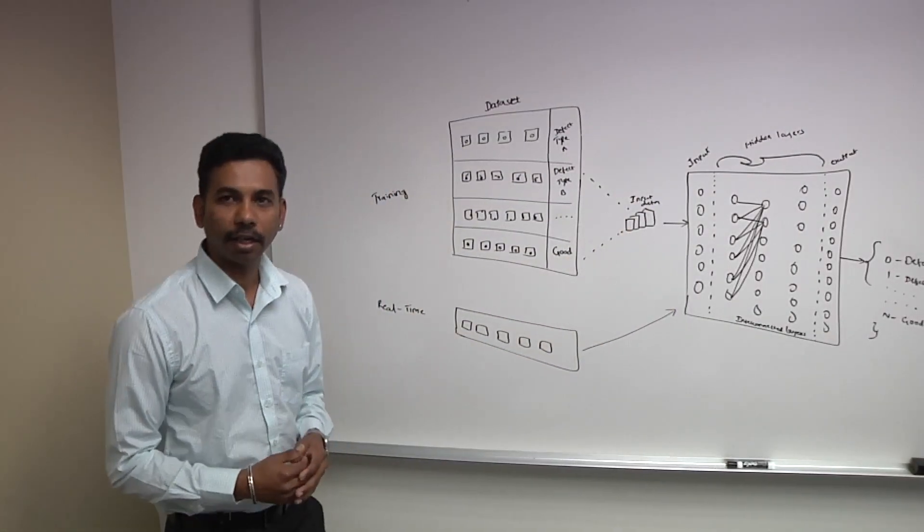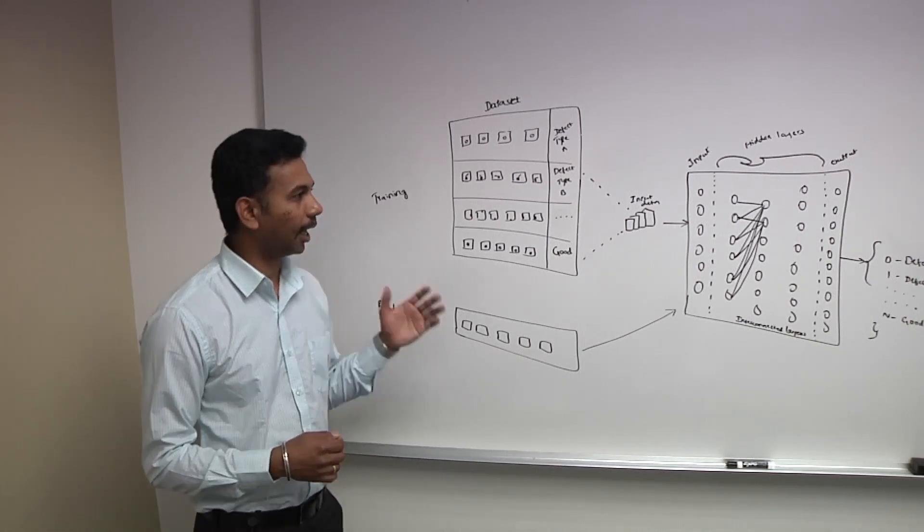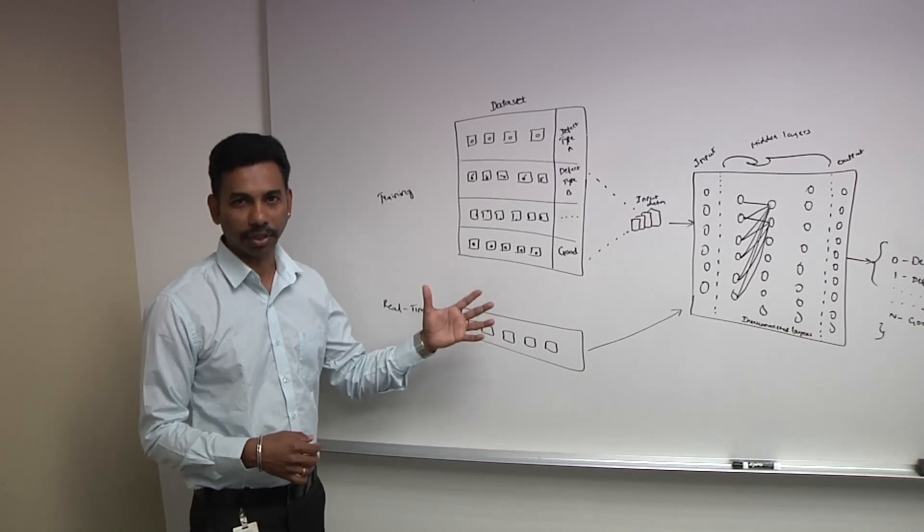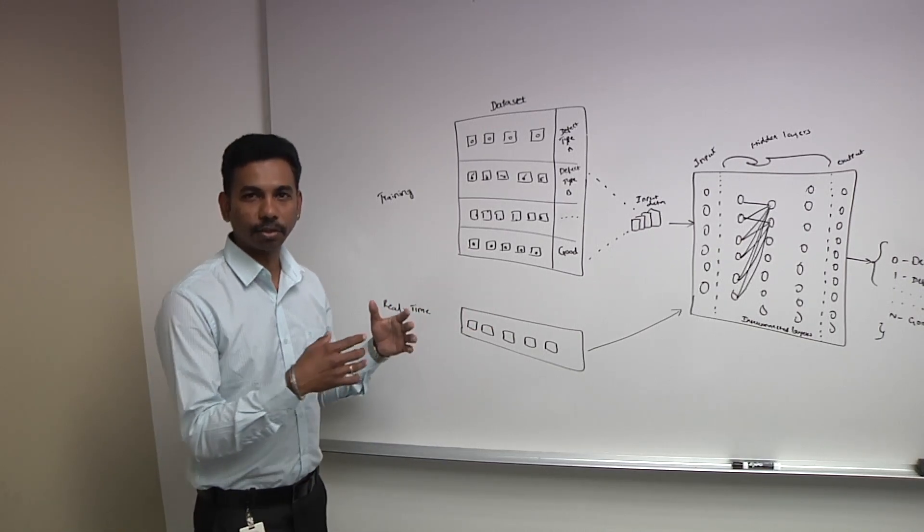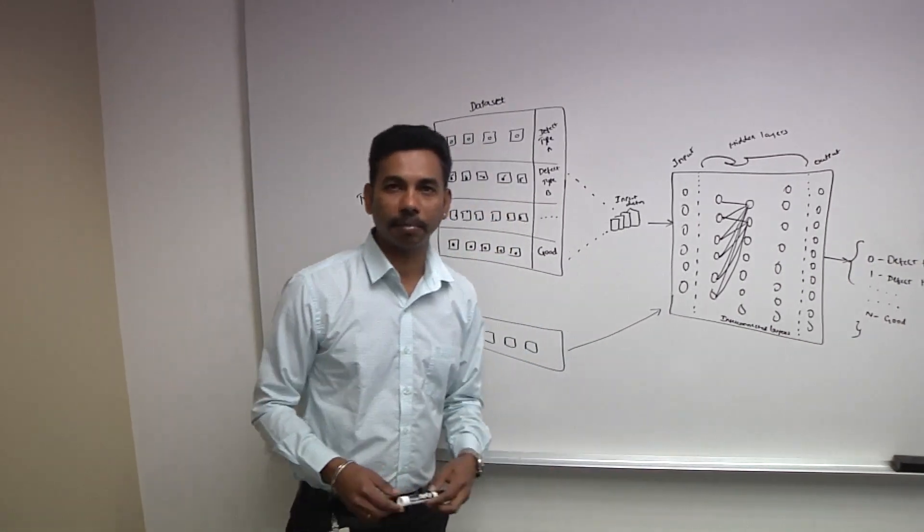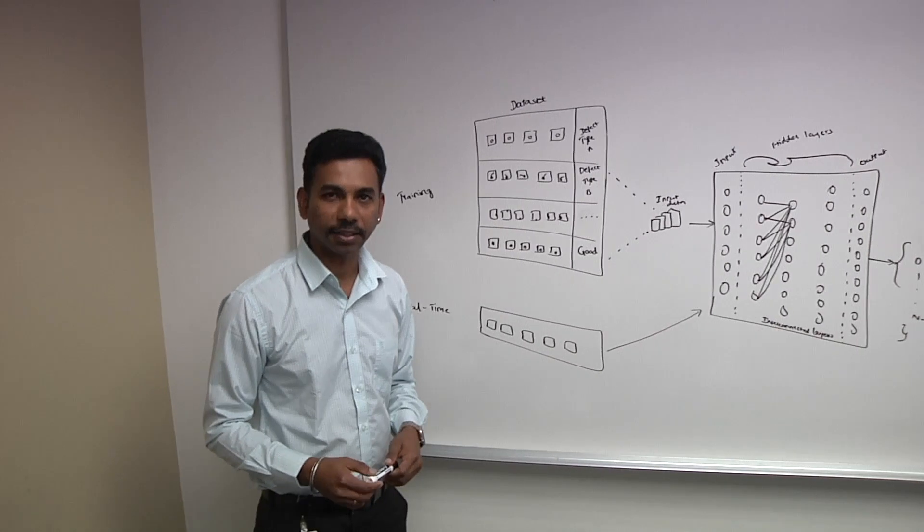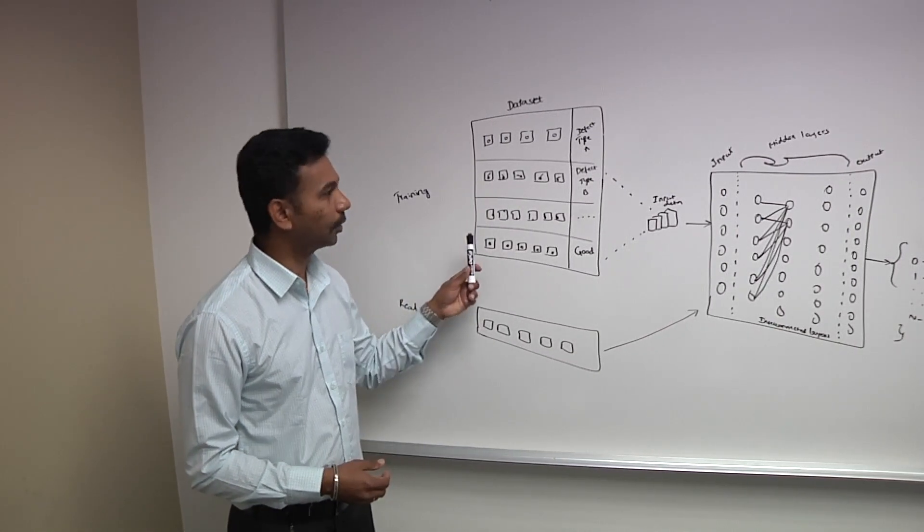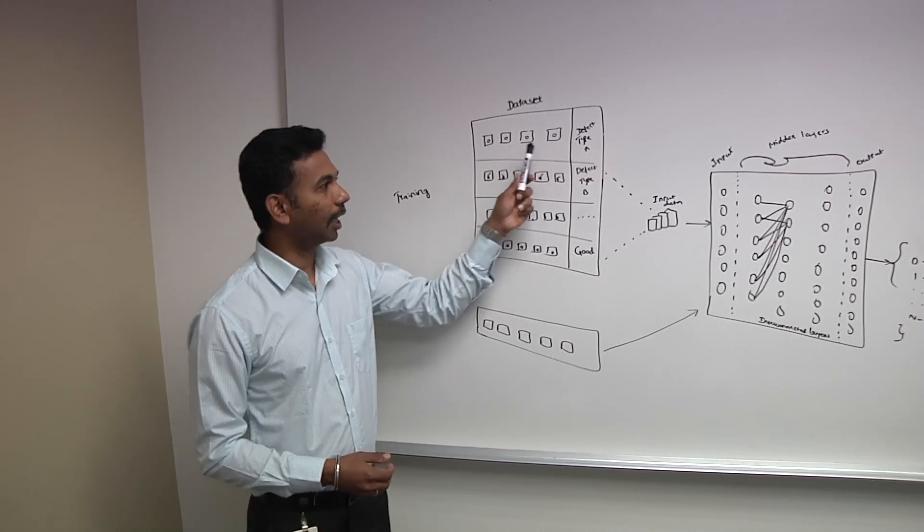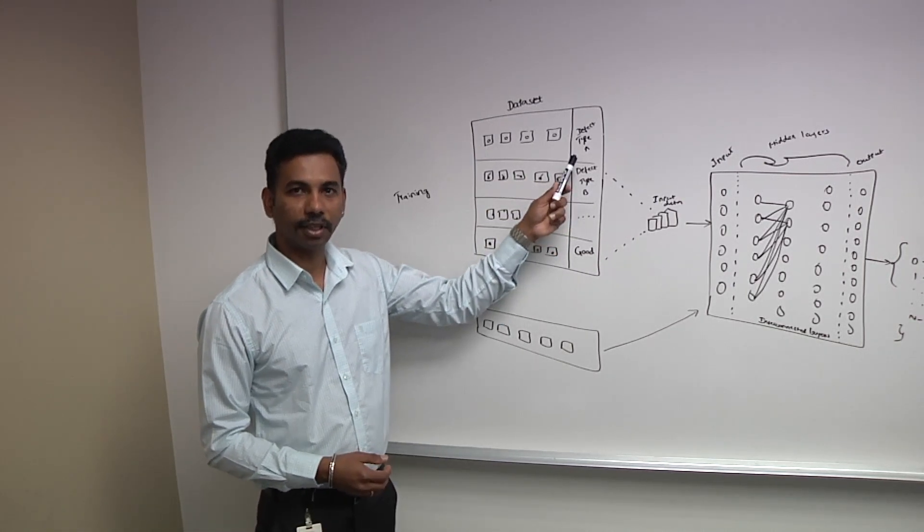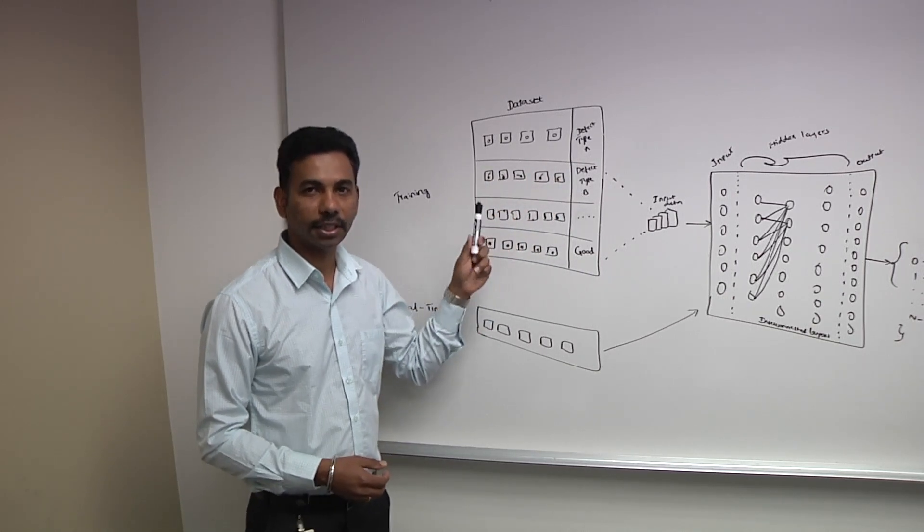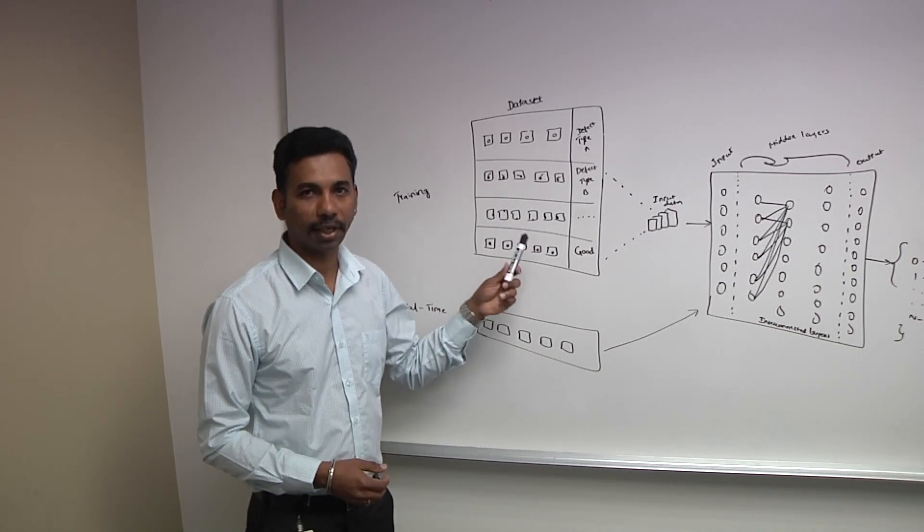To give you an idea how we solve this problem, here I have presented a generic model preparation, how it works. So the first step here is, for the AI model preparation, you need a dataset. So the first procedure you can see here in this dataset, we have to collect all different defect types and each different defect types, you need to have a set of images required. So this is a very important procedure for creating the models.